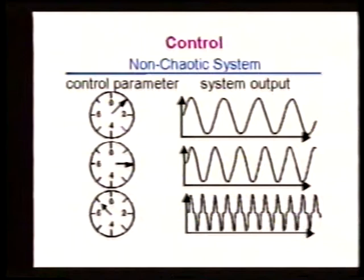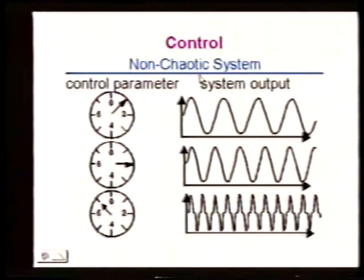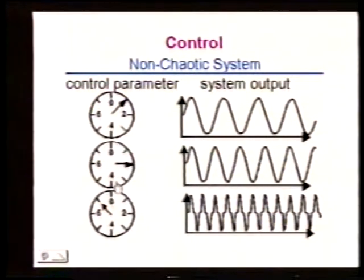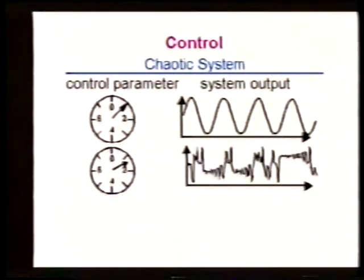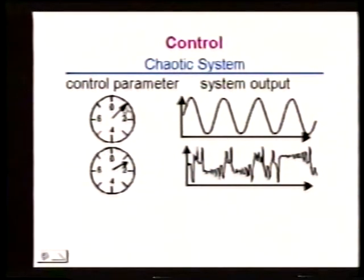Here we have symbolically illustrated a system with some control parameter. If this is a non-chaotic, mostly linear system, when we change the control parameter a little bit, the system changes a little. If we want a large change, we need to change the parameter a lot—we really have to bang on it hard. If the system is chaotic, and we have sensitivity to initial conditions and bifurcations, then in order to change the system output we may only need to change the input a little bit to cause a dramatic change in the output.